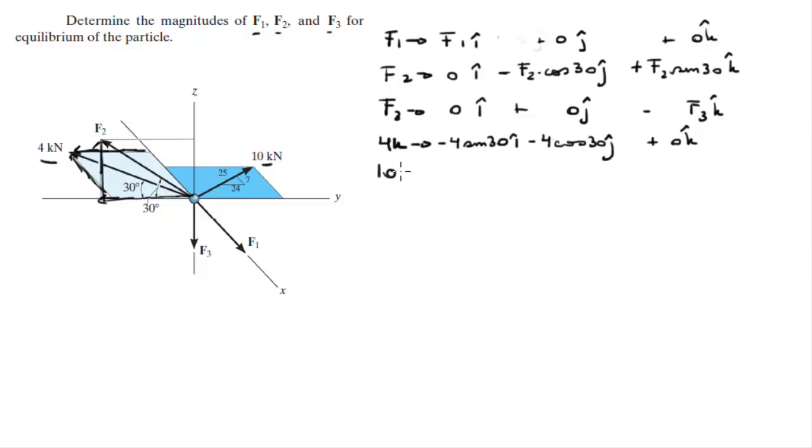Now the 10 kN force has a positive component in the y and a negative component in the x. So it's -10(7/25) i + 10(24/25) j + 0 k. You get the 7 and 25 from the triangle shown here.